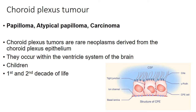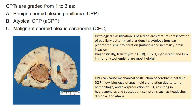Choroid plexus tumours basically encompass the papilloma, the atypical papilloma and the carcinoma. They are rare neoplasms derived from the choroid plexus epithelium, as shown in this diagrammatic representation. They occur basically in the ventricle system of the brain and typically affect individuals in the first and the second decade of life. Choroid plexus tumours are graded as grade 1, 2 and 3.